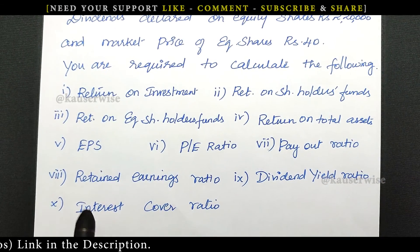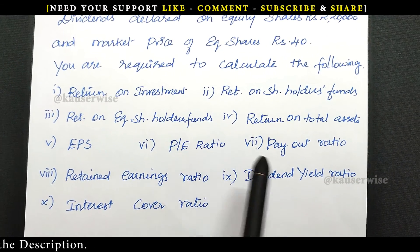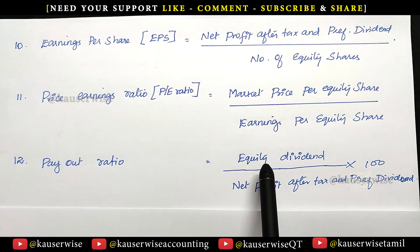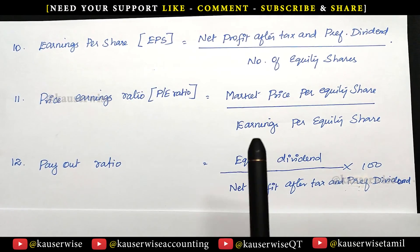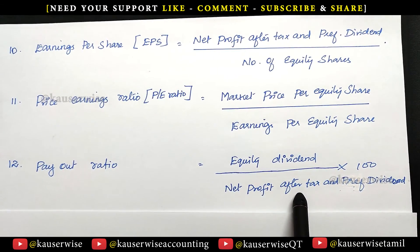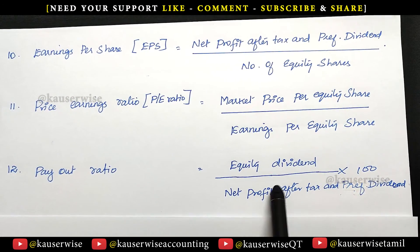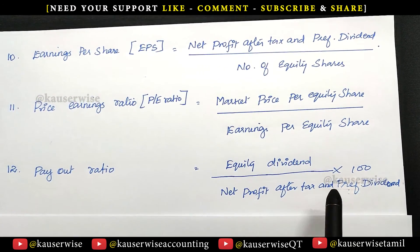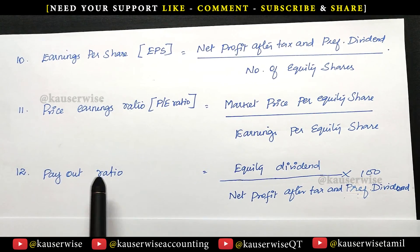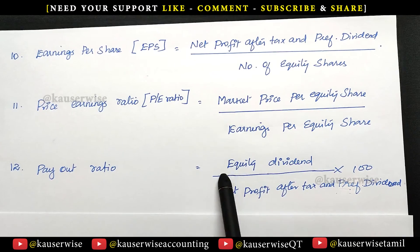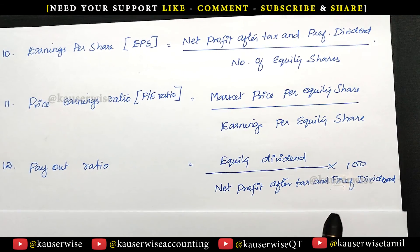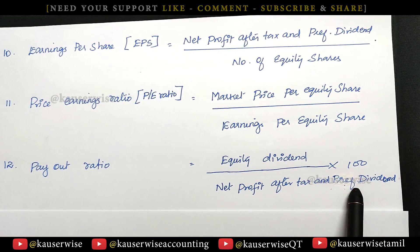So far we have calculated EPS and PE ratio. The next one is payout ratio. The formula is equity dividends divided by net profit after tax and preferential dividend, into 100. So this shows what proportion of profit available to equity shareholders was actually declared as dividend. Equity dividend declared to equity shareholders divided by net profit available to equity shareholders — where net profit available is net profit after tax and preference dividend.